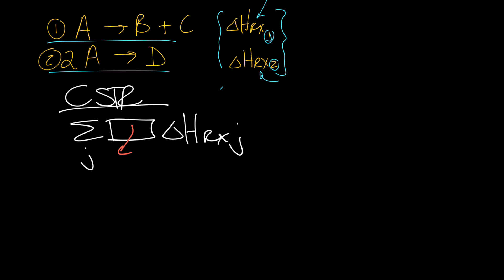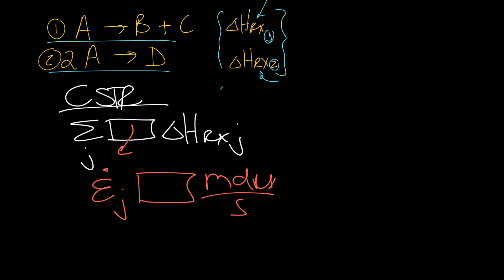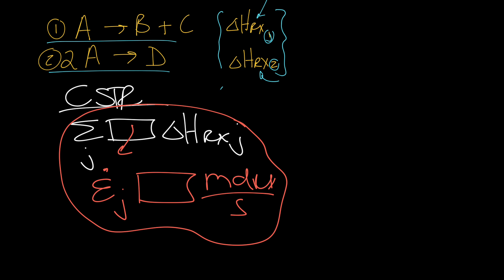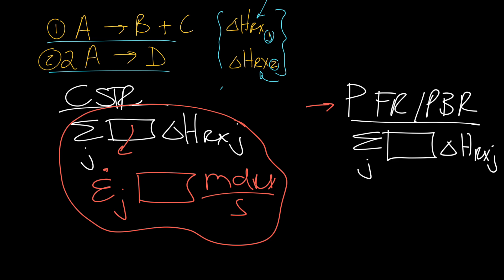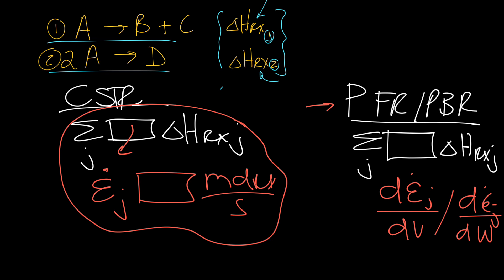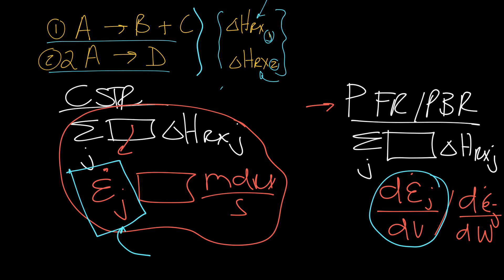For a CSTR reactor, we simply substitute the extent of each reaction J, which has units of mole reaction per second, making the units consistent. For a PFR or packed bed reactor, we need the incremental change in the extent of each reaction per either the volume of the reactor or expressed on a mass basis along the packed bed reactor. We need an equation to express dε/dV or dε/dW in our packed bed reactor.